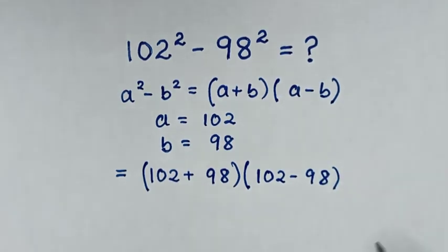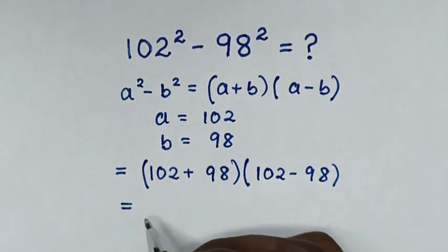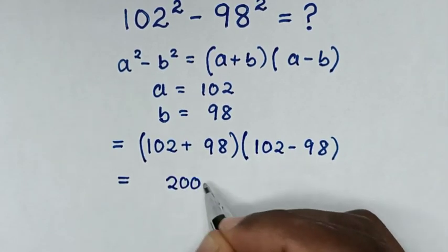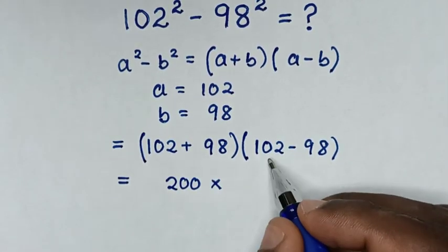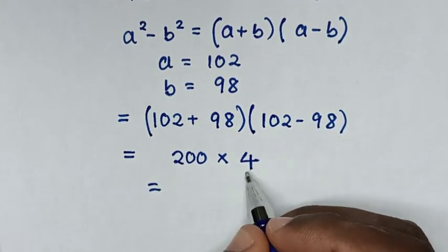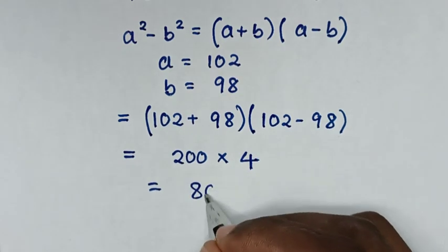Bracket, then it will be equal to 102 plus 98 is 200, then times 102 minus 98 is 4. So it will be equal to 200 times 4 is 800.